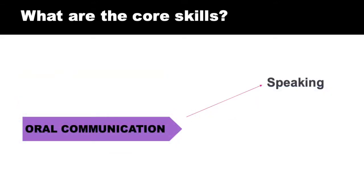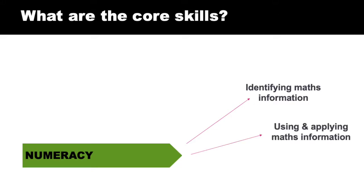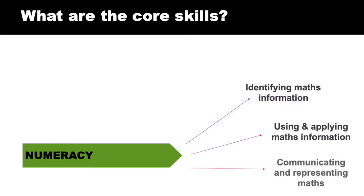Oral communication is about speaking and listening. Numeracy is approached through three separate strands: identifying mathematical information, using and applying that mathematical information or problem solving processes, and then communicating and representing maths.